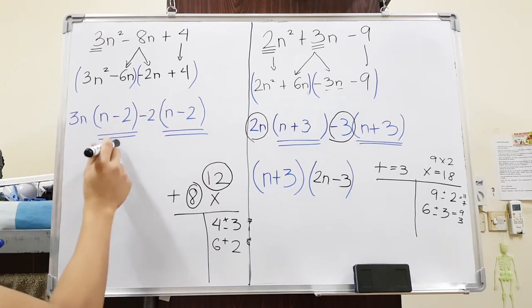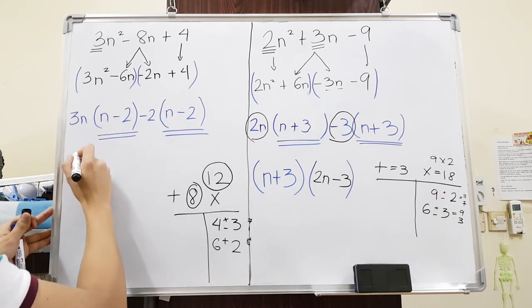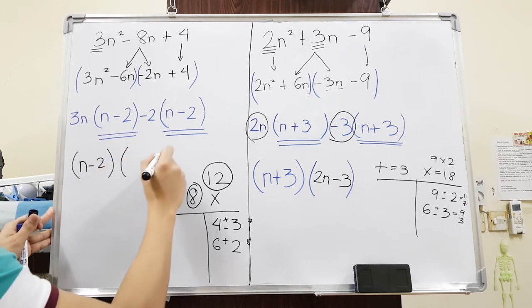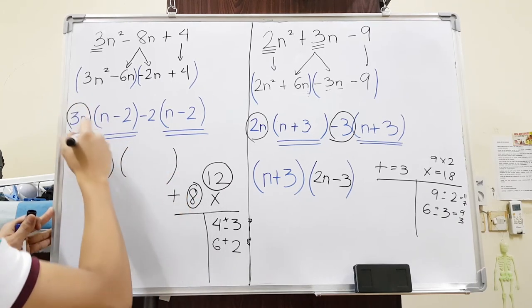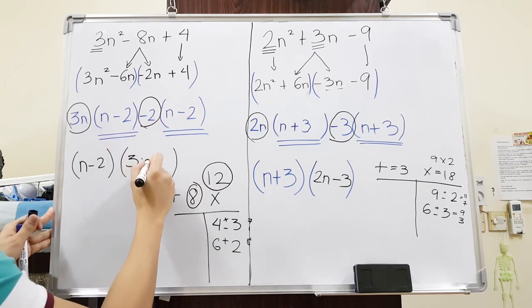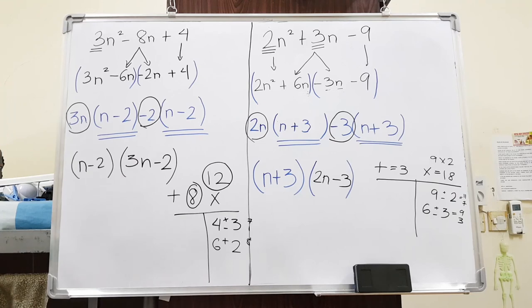Now, as you can see, we have the same number, same factor here, which is n minus 2. So the shortcut is just write n minus 2. And then bracket, the remaining numbers outside those two brackets that are equal. So 3n minus 2. And that is how you factor a quadratic trinomial when a is not equivalent to 1.